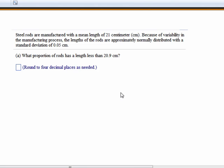Steel rods are manufactured with a mean length of 21 centimeters. Because of variability in the manufacturing process, the lengths of the rods are approximately normally distributed with a standard deviation of 0.05 centimeters.